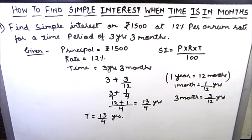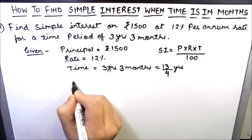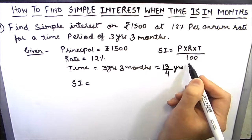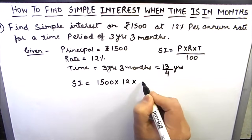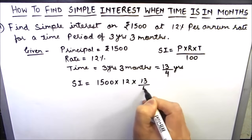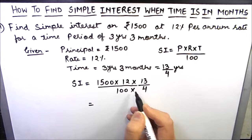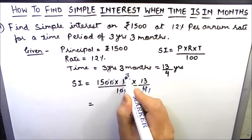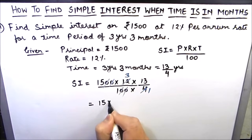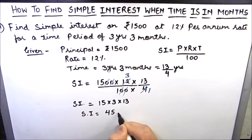Now we will put these values in the formula for finding simple interest. SI equals principal times rate times time divided by 100. Principal amount is 1500, rate of interest is 12% per annum, and time is 13 by 4 years, all divided by 100. Simplifying, the two zeros cancel with the two zeros, and we are left with 15 times 3 times 13.